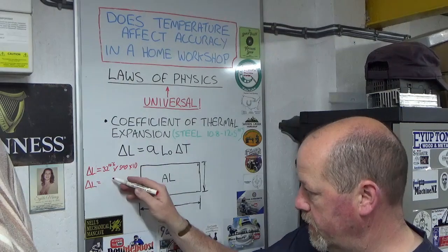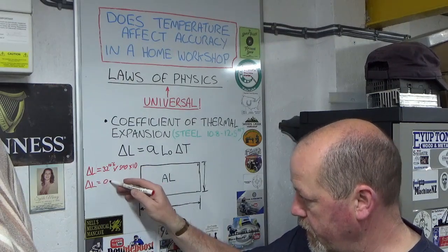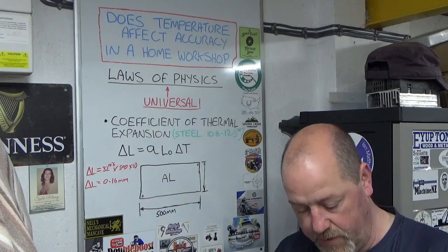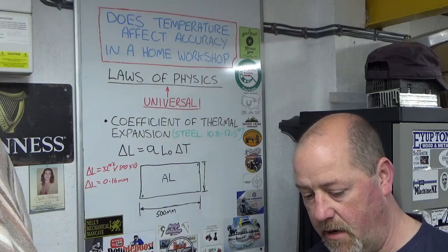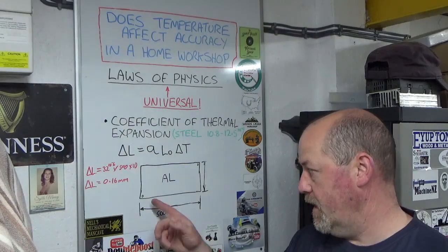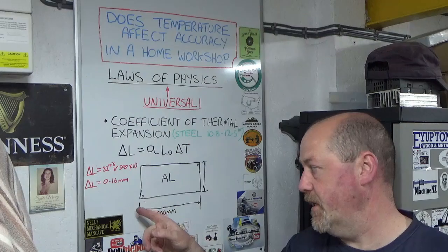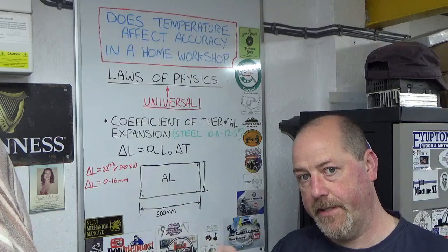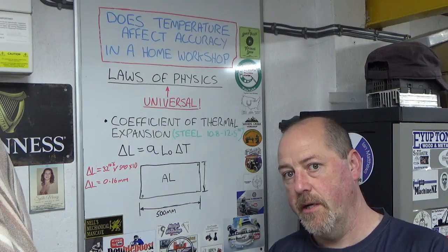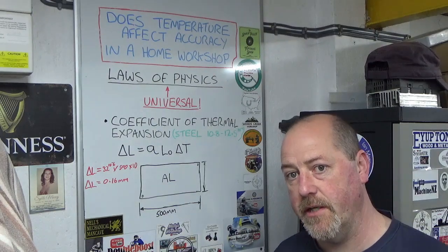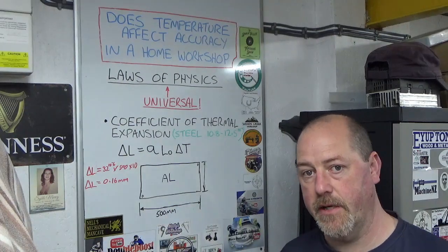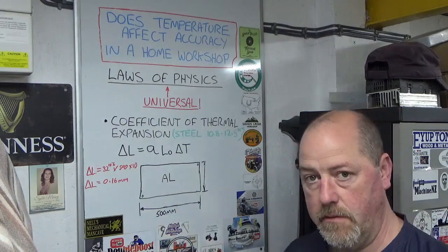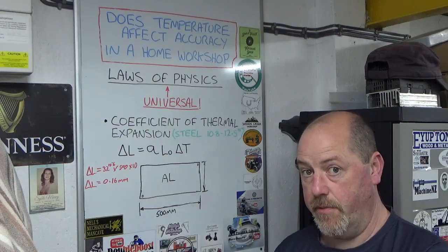And I've already done the maths—the output here is 0.16 millimeters, which is about six and a half thou, roughly. So if I've got a plus minus a thou, or even plus minus two thou tolerance between these two holes, and I experience a 10 degree temperature shift between day and night while the job's still on the machine, I've blown my tolerance. So you can see very quickly how you can get to temperature being a problem.